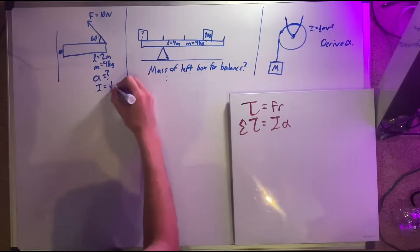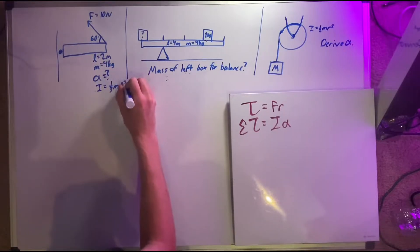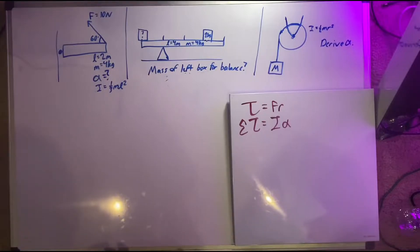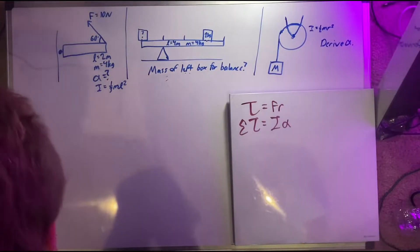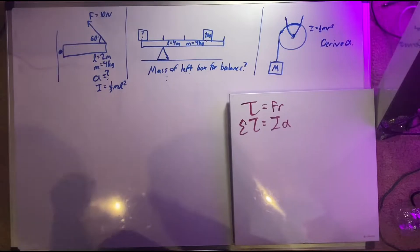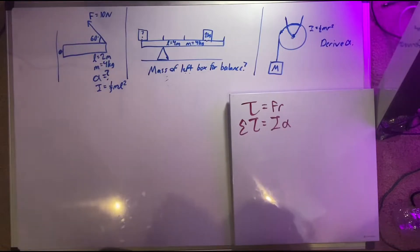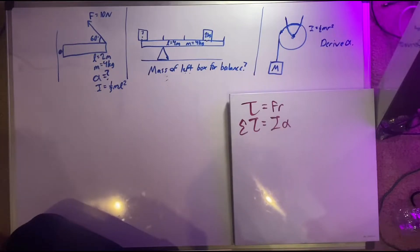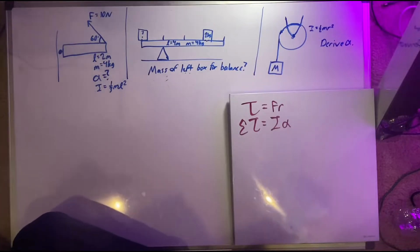I is equal to one-third ML squared — you're not supposed to be able to memorize that, so it's fine to look it up. Now, everything's good up there. Now we can use this to solve for everything else.